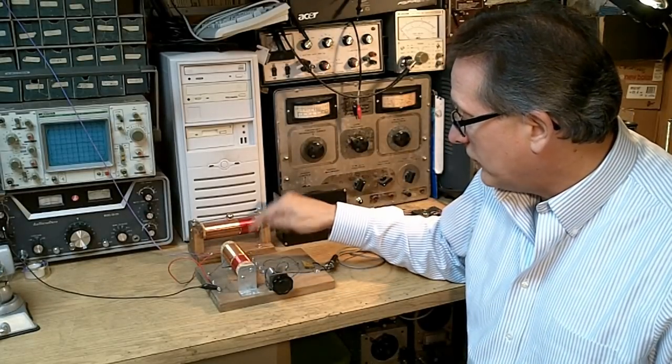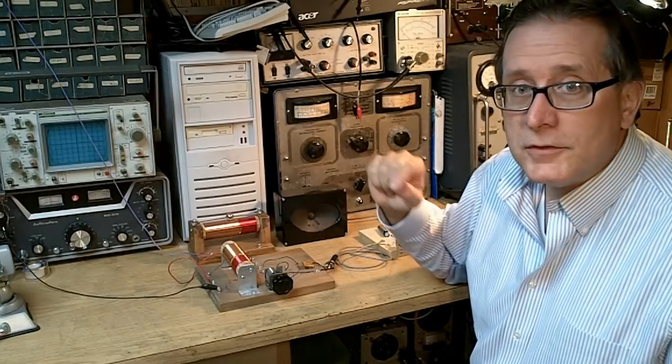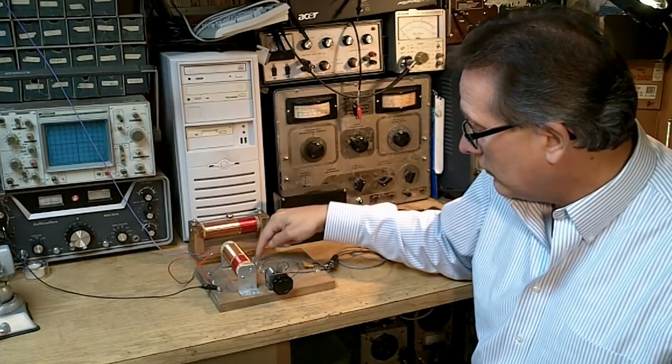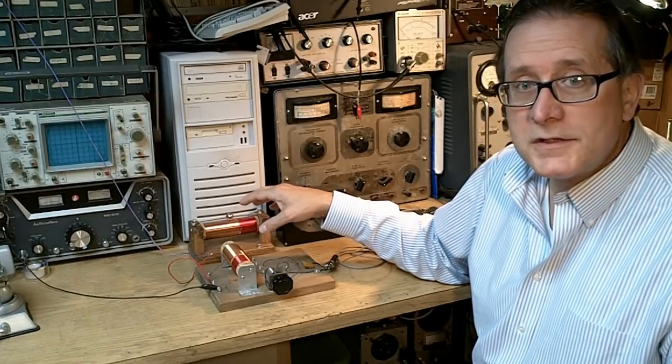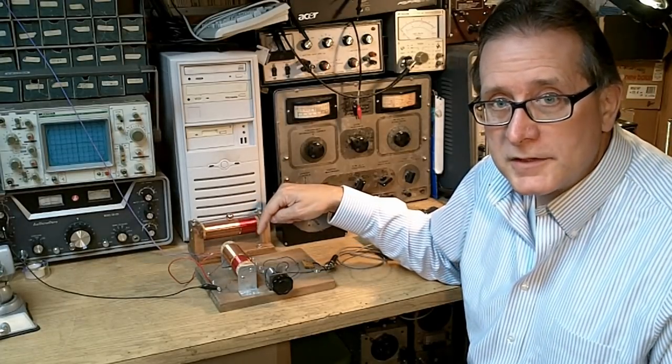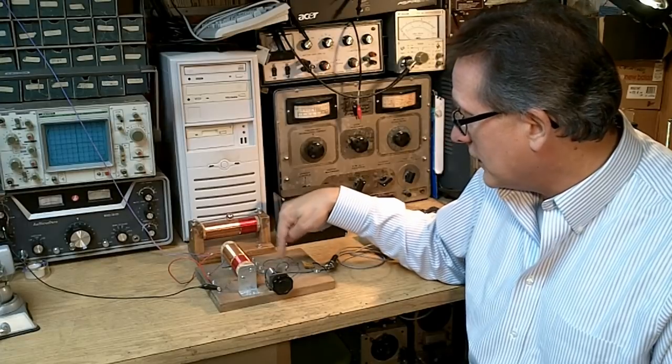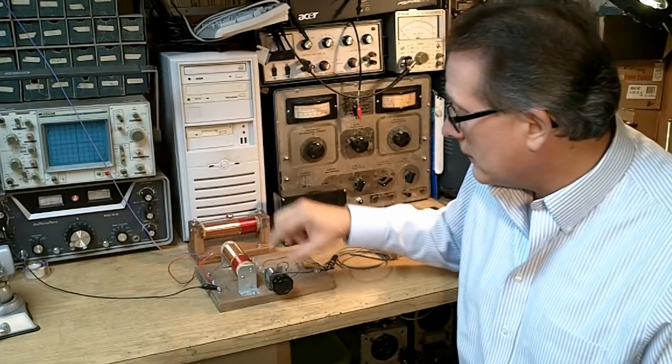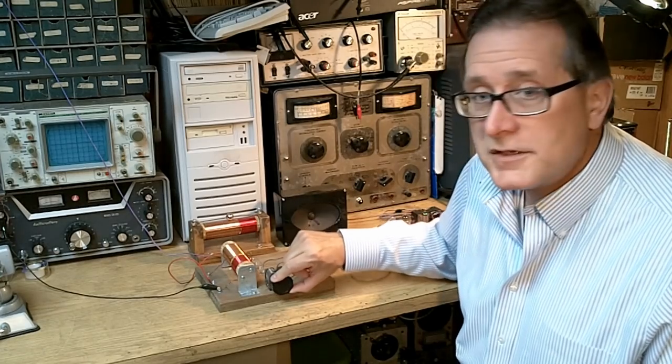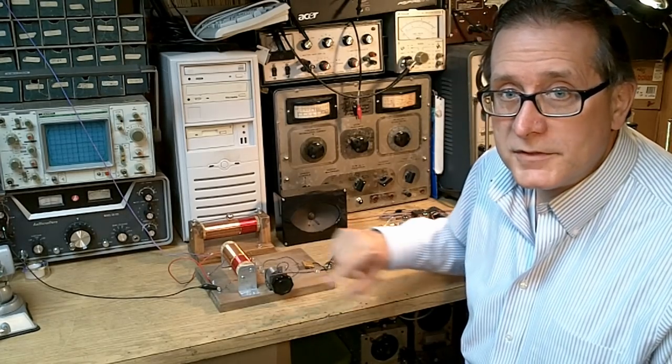It also has some taps on it, and we use these taps for two purposes. First of all, we use the taps to be able to cover the high end of the broadcast band and the lower end of the broadcast band. And we use the taps to connect the diode to a lower impedance point on the tuned circuit, thus giving us the maximum selectivity with the receiver.